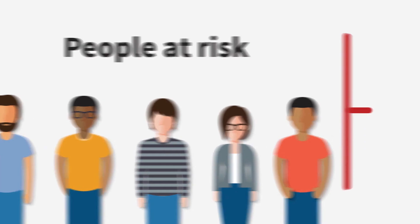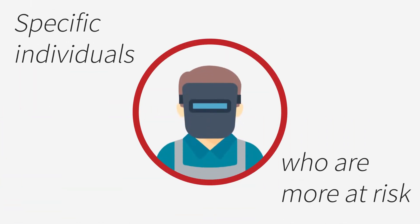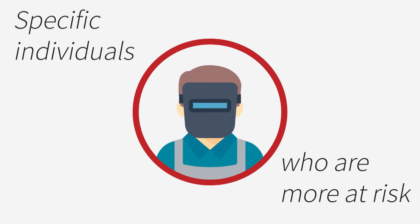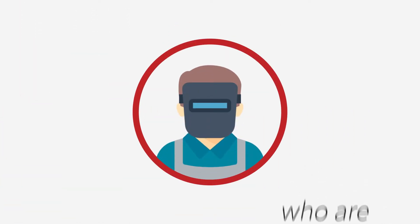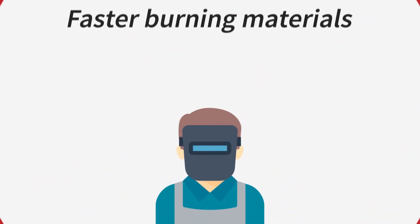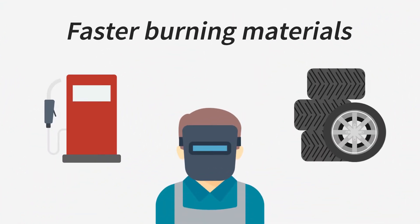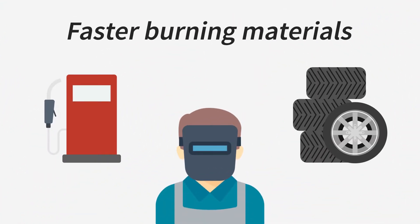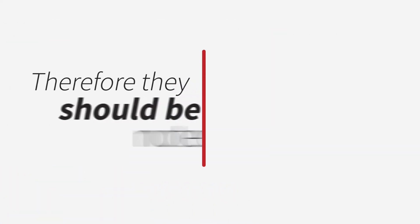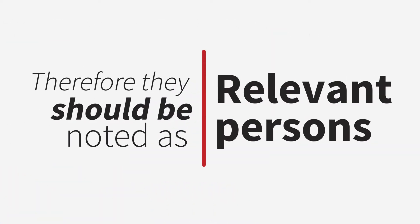There may be specific individuals who are more at risk should a fire occur. Individuals who may be working in the vicinity of faster burning materials, such as petrol and rubber, are at a higher risk and therefore should be noted as relevant persons.